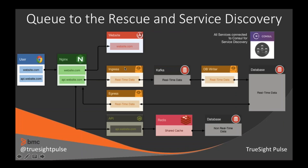Queues and service discovery to the rescue. By putting a queue in the middle of our ingress path, we can now protect both our database and our database writer. As data comes in, we can store it and keep that history. If something has a glitch or a deployment goes wrong, you have that data stored in a separate path and you can pull it off as fast as you can process it. The queue made our ability to scale much more apparent — we could scale the queue, the ingress, and the DB writer independently, protecting the database from that onslaught of data.